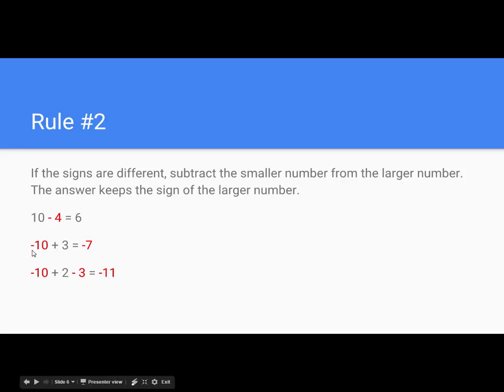Here's another example. Negative 10 plus 3 equals negative 7. I look to see the sign of the 10, it's negative. Then I look to see the sign of the 3, it's positive. If the signs are different, subtract them. 10 minus 3 is 7. Now I look, the larger number is negative 10, so my answer keeps the negative sign.